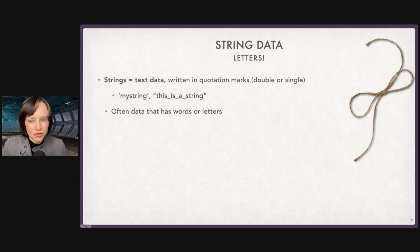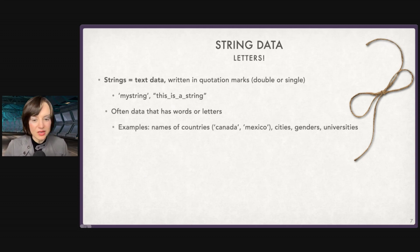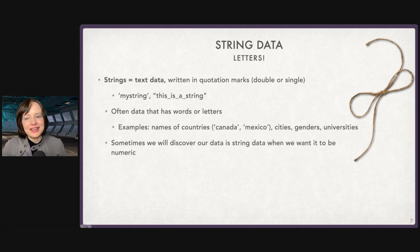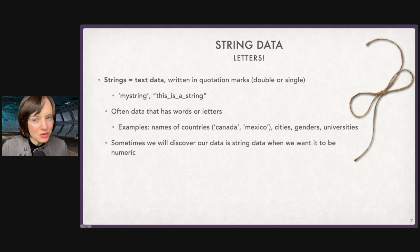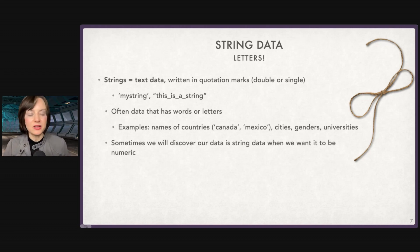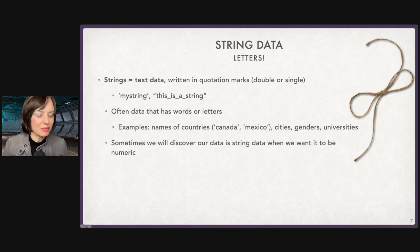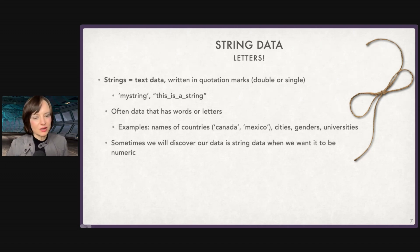Usually data that has words or letters is going to be recorded as a string: names of countries, genders, universities, and so on. One of the biggest ways that string data will show up is when it shouldn't be coded as string data. This is usually because the dataset we're importing is funky in some way. We might import something like a year — 1989 — and it will say it's a string because of how the file saved it. And you want to find the maximum year, so you'll have to manually change it from a string to a number.